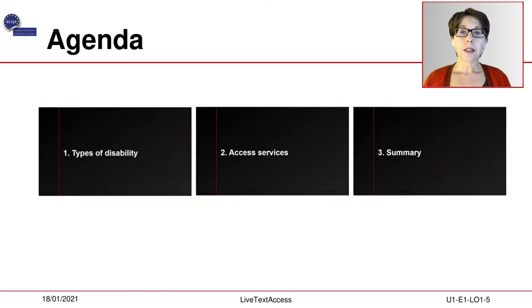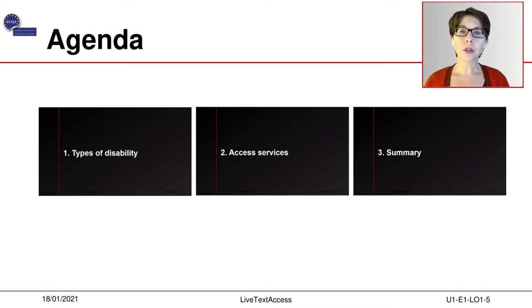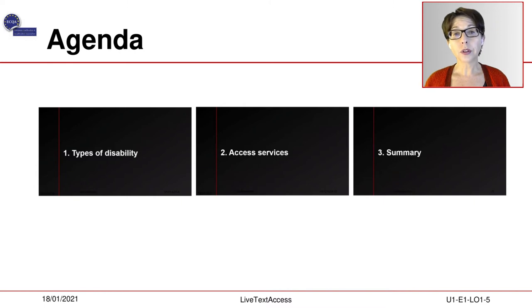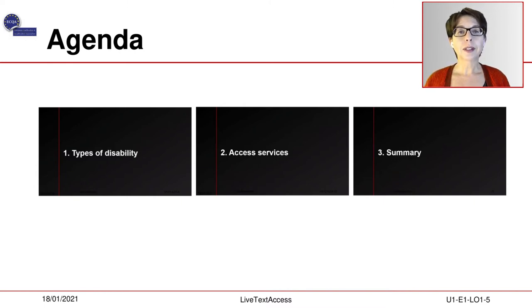Let's take a look at the agenda. Firstly, we will discuss the characteristics of the term impairment as defined by the World Health Organization and how this term is used in the definition of a type of disability. Then we will discuss how access services have emerged to provide access to content for persons who cannot access this content in the original form. Lastly, the video lecture will end with a summary.